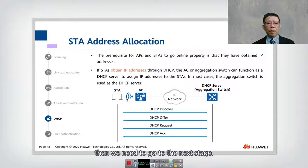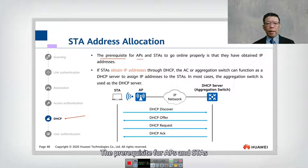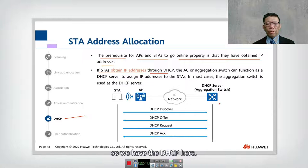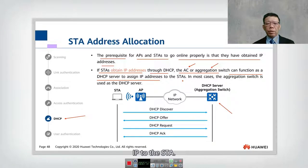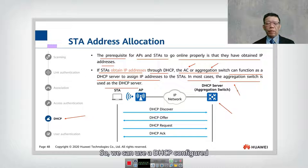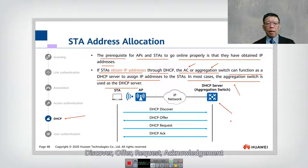Once the STA is successfully associated, it needs to obtain an IP address via DHCP. The prerequisite for the STA to go online is having a valid IP address. The AC or an aggregation switch can function as a DHCP server to assign IP addresses. In most cases, the aggregation switch is used as the DHCP server, following the standard DORA process: Discover, Offer, Request, and Acknowledgement.